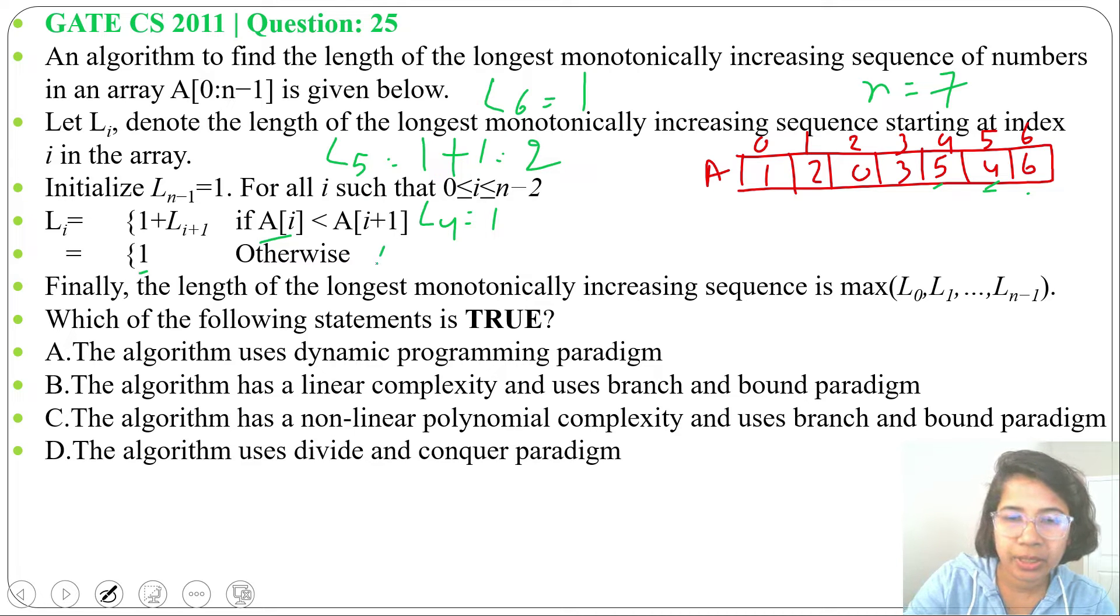Next find L_3. A[3] is 3, A[4] is 5. Is 3 less than 5? Yes, so it will be 1 plus L_4, which is 1, so it will be 2. Next we will find L_2: is 0 less than 3? Yes, so it will be 1 plus L_3. L_3 is 2, it will be 3.